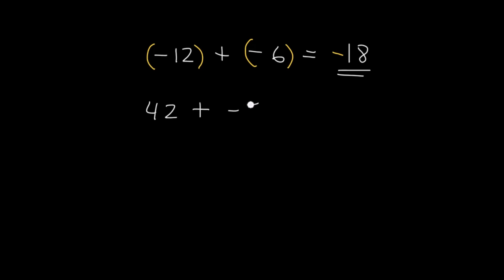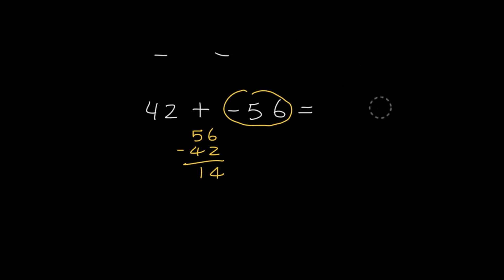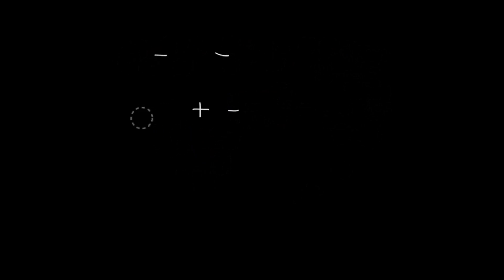Now try this problem: adding a positive and a negative. We take the sign of the bigger number, which is negative 56, and subtract. 56 minus 42 is 14. But remember the sign — our final answer is negative 14. If you're enjoying adding integers, please like this video and leave a comment.